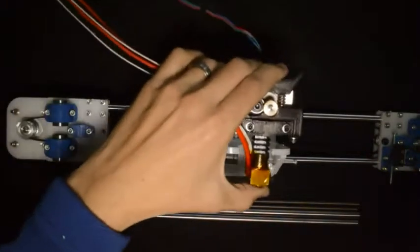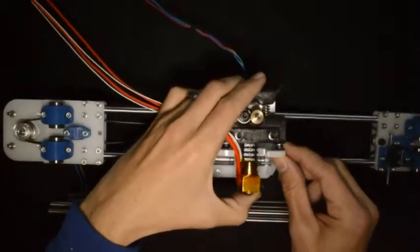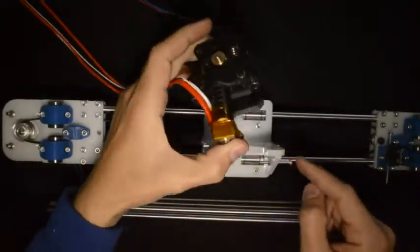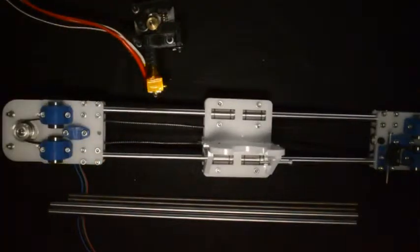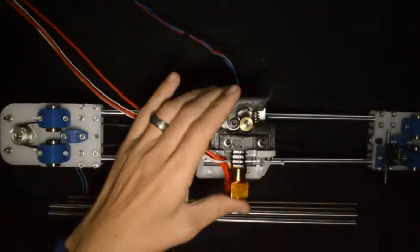So we'll mount the extruder to the X carriage with the M4 screws that are provided. When you are done with that and the extruder is nicely secured,